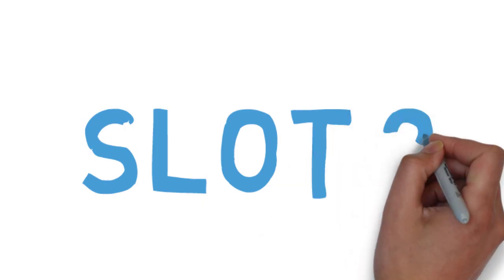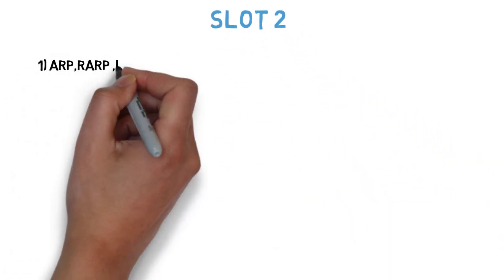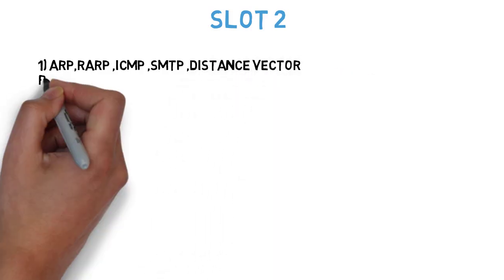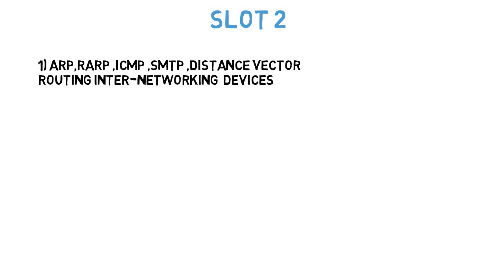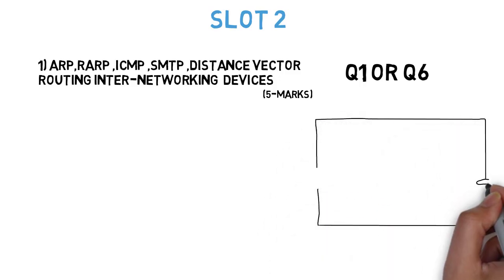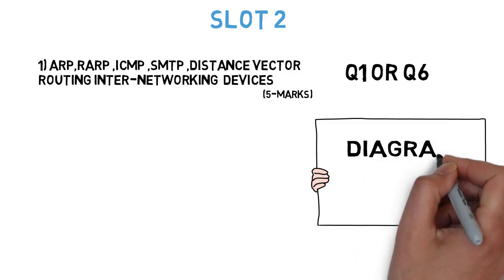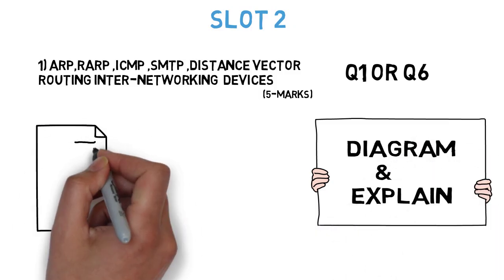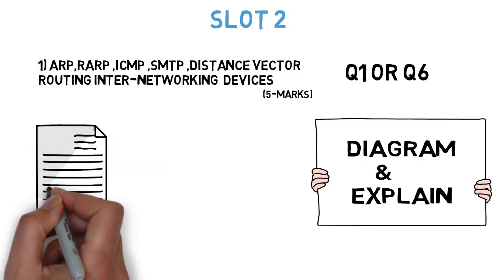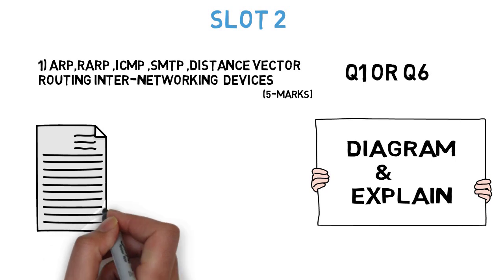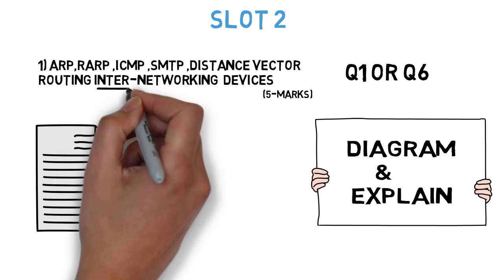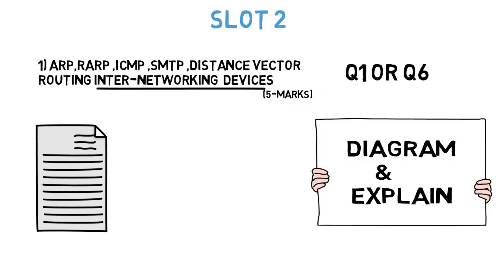For Slot 2, the first question is a short note on ARP, RARP, ICMP, SMTP, distance vector routing algorithm, and internetworking devices. These five questions can be expected in question number one or six, each for five marks. ARP and RARP are protocols; ICMP requires a diagram plus explanation of header formats; SMTP requires a brief explanation; and internetworking devices is an easy but important question.